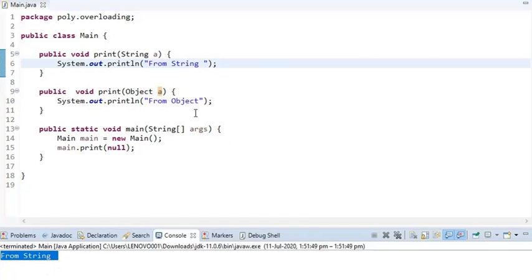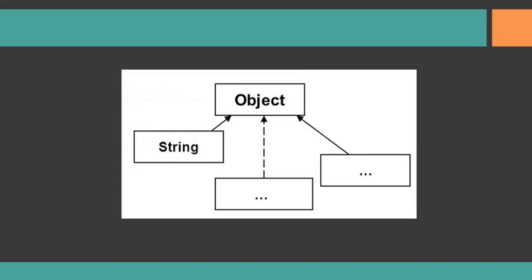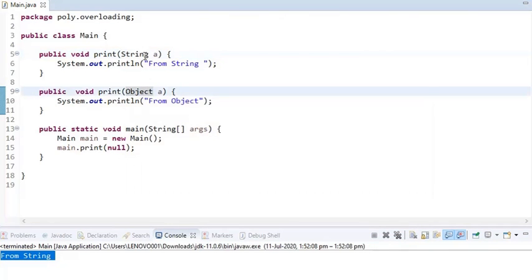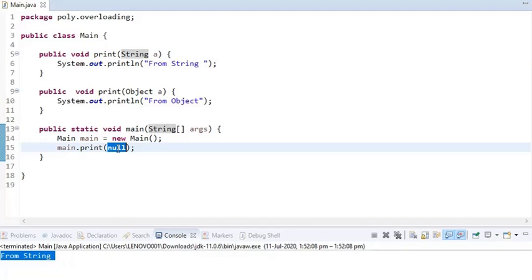The output is 'from string'. To understand why, we solve this type of overloading question using the concept of hierarchy. As you can see in the image, Object is at the top while String is the child. In these cases, priority always goes to the most specific one. String is the most specific argument here — Object is the parent, String is the child — so 'from string' is the output.